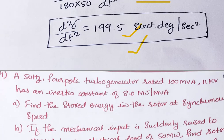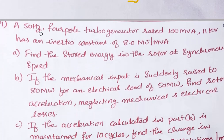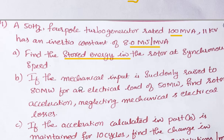Problem four: a 50 Hz, 4-pole turbo alternator rated 100 MVA, 11 kV has an inertia constant of H = 8 megajoules per MVA. First, find the stored energy in the rotor at synchronous speed. Second, if mechanical input is suddenly raised to 80 MW for an electrical load of 50 MW, find the rotor acceleration neglecting losses.